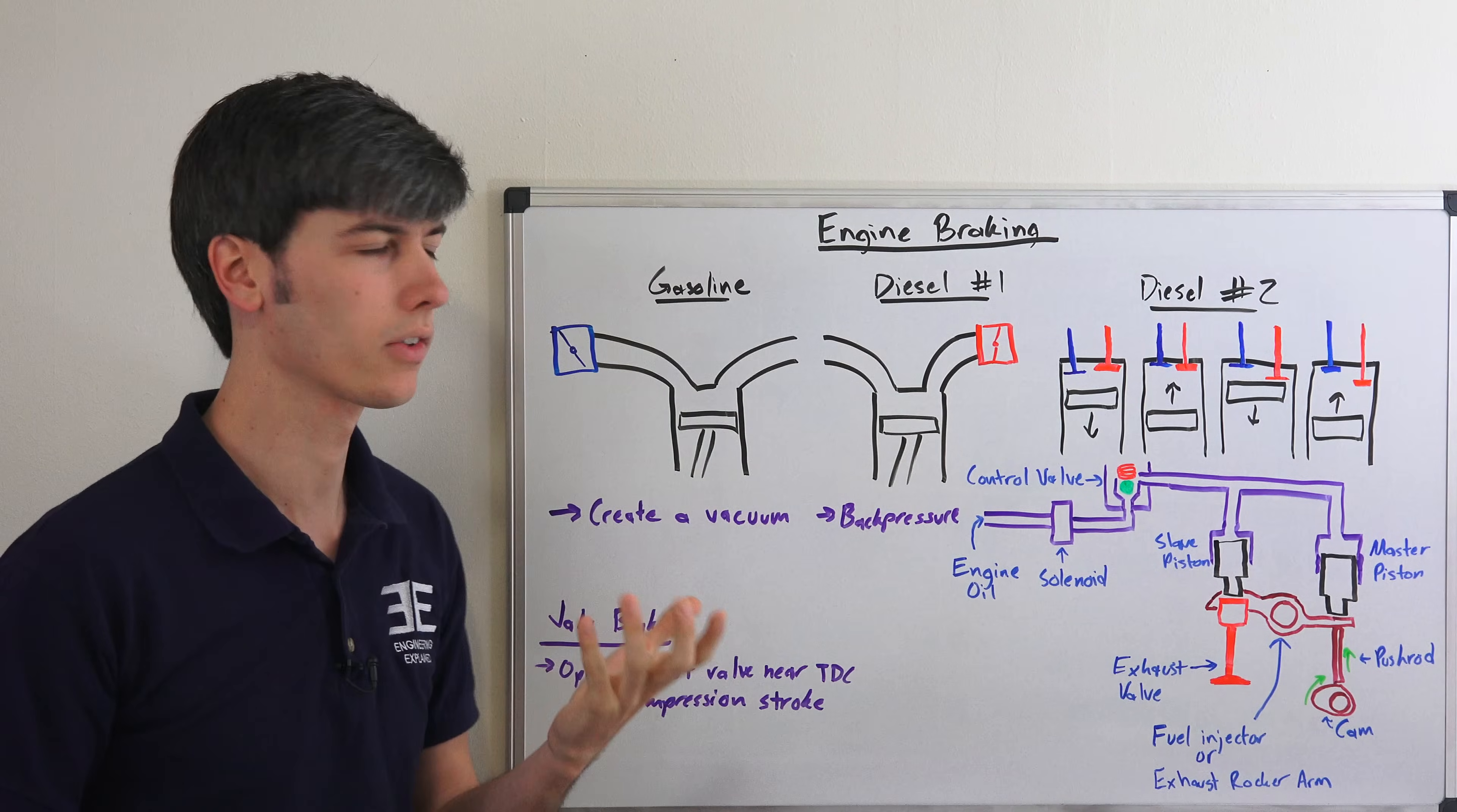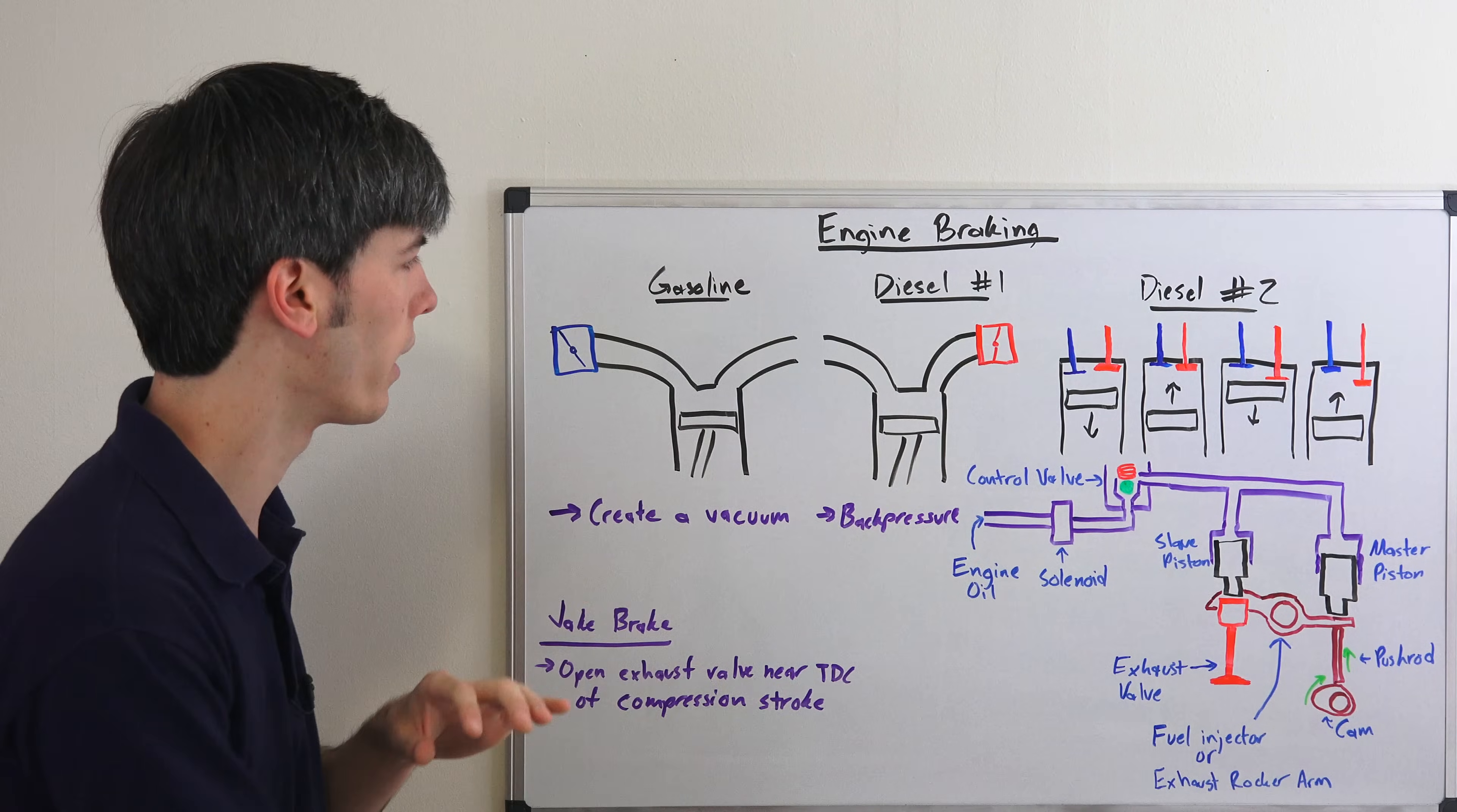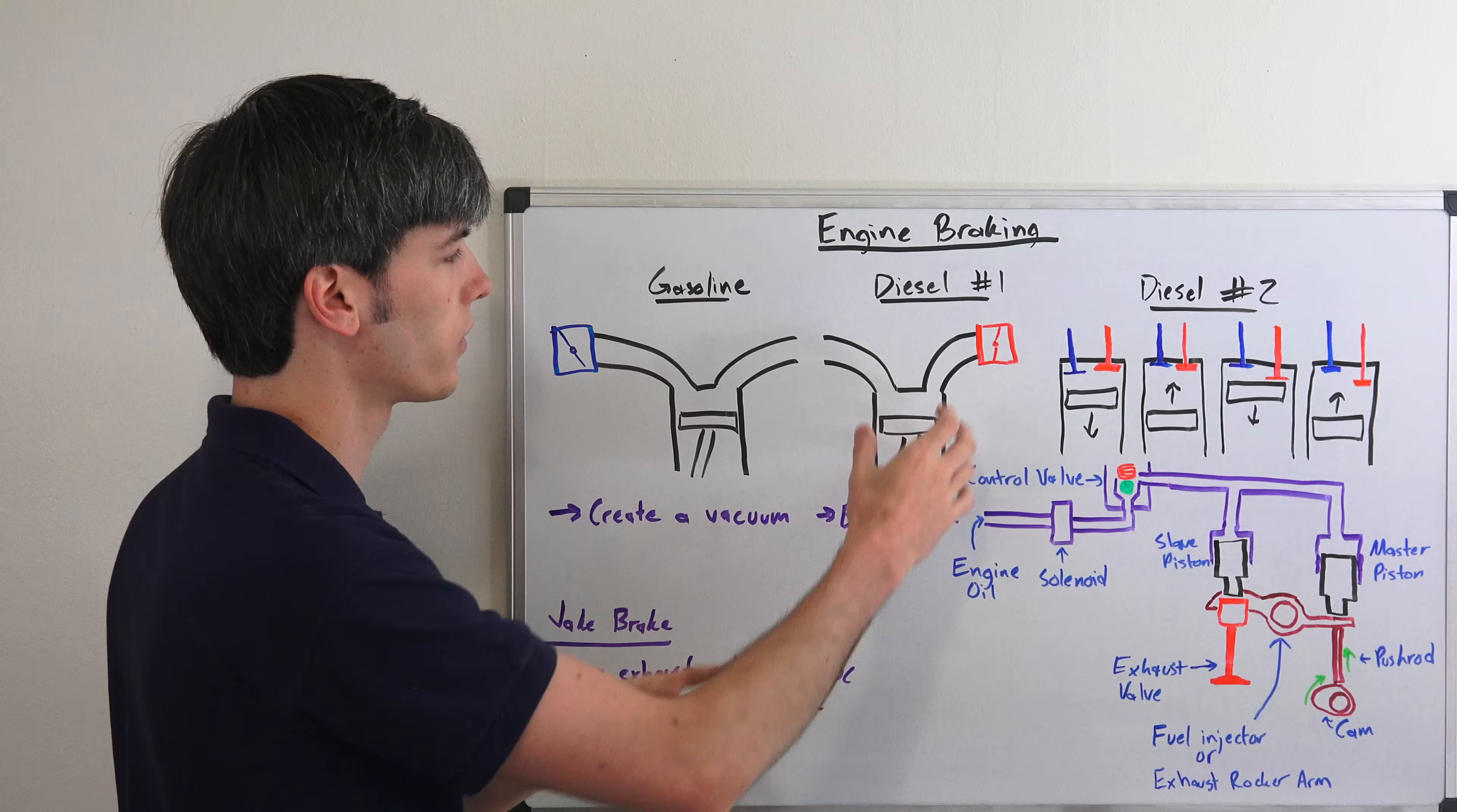Now in a diesel engine traditionally you won't have throttle bodies and so because of that what they've done is they've added one on on the exhaust side.